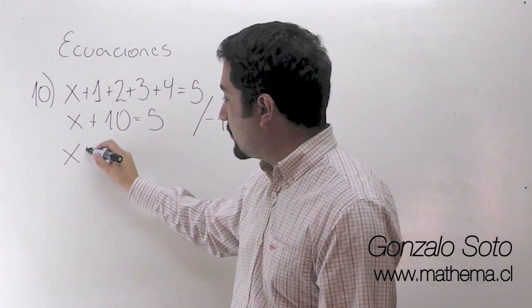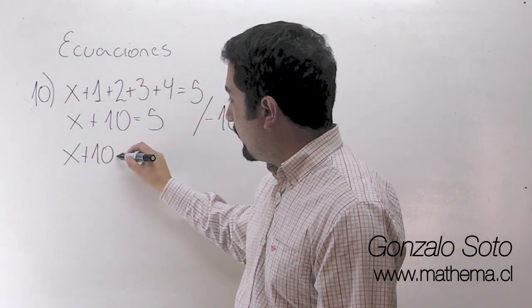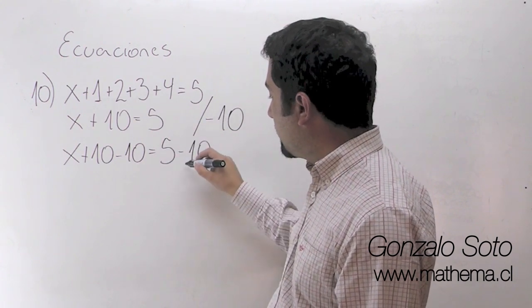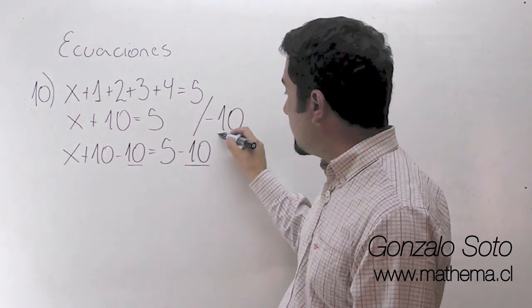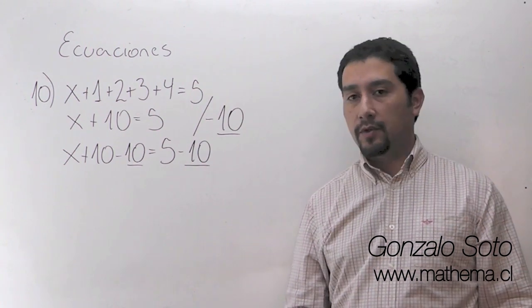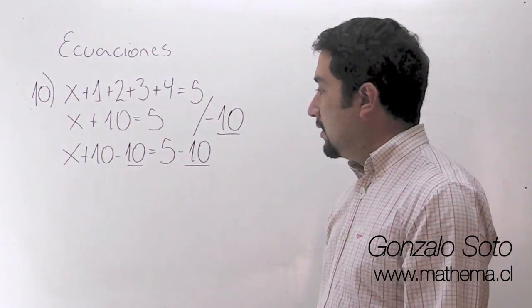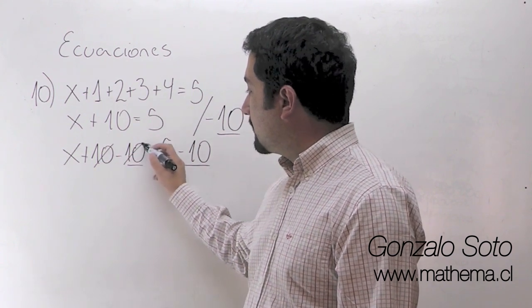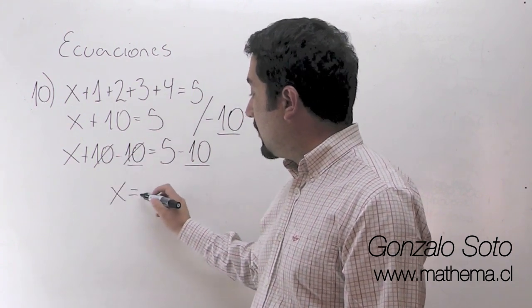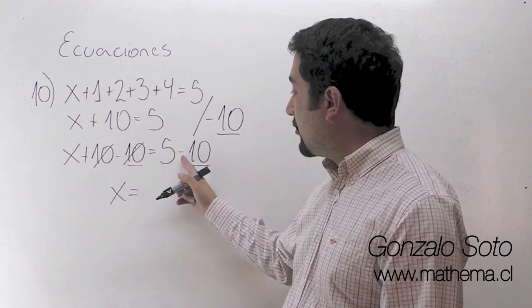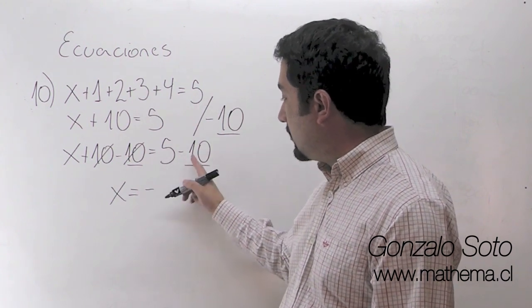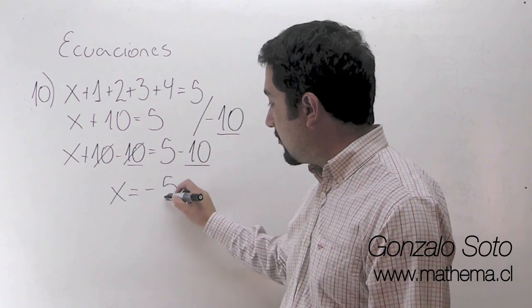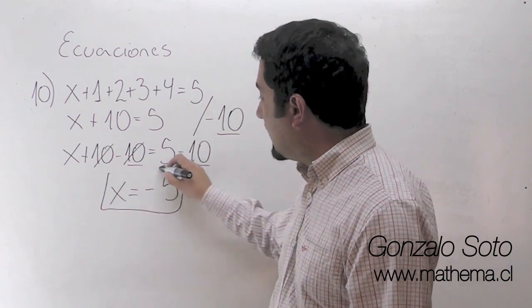Entonces tenemos x menos 10 es igual a 5 menos 10. Estoy restando a cada lado. Números iguales con signos distintos, esto es 0. X es igual a 5 menos 10. El mayor es negativo, por lo tanto restamos las cantidades: esto es 5. Por lo tanto x vale menos 5.